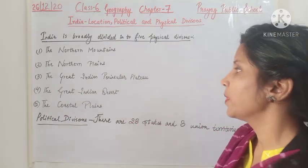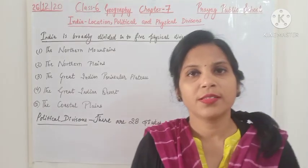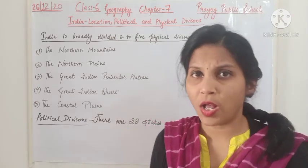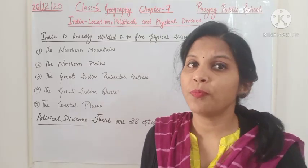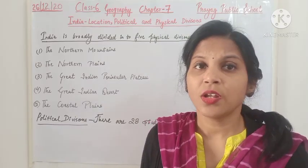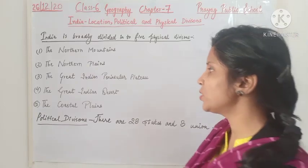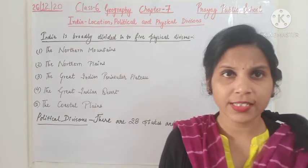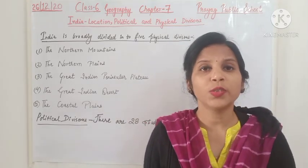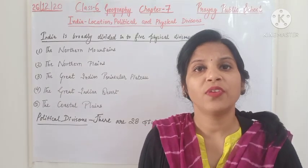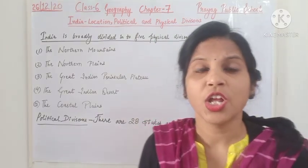The third division is the Great Indian Peninsular Plateau. A plateau is a table land — an area slightly elevated from the plains. This area is very good for mining. The fourth is the Great Indian Desert, also known as the Thar Desert. A desert is a large land covered with sand with very less vegetation and very less rainfall. Parts of Rajasthan and some parts of Gujarat come under the Thar Desert.